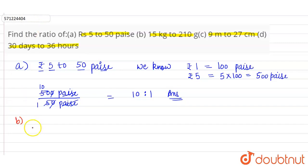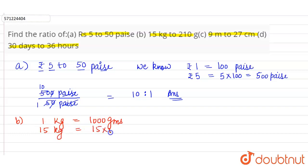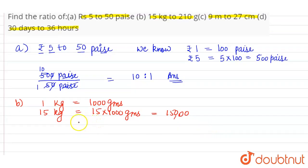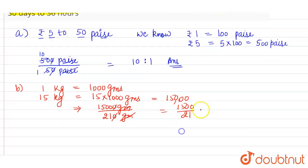For part (b), we have to find the ratio of 15 kg to 210 grams. We know 1 kg = 1000 grams, so 15 kg = 15 × 1000 = 15,000 grams. The ratio is 15,000 grams ÷ 210 grams. Cancelling the zero gives 1500 ÷ 21. The common factor is 3, so dividing gives 500 ratio 7.